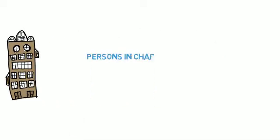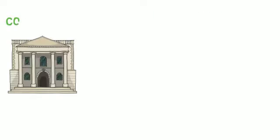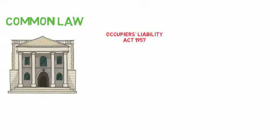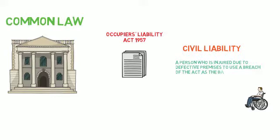You would imagine that persons in charge of premises should have some responsibility to make sure that visitors are safe when using their premises, and you'd be right. The Common Sense Principle was established in common law through decisions made over the years by judges, but it's also clarified in statute law in an Act of Parliament, the Occupier's Liability Act 1957. Note that we are still concerned here with civil liability, so the sole purpose of this Act is for a person who is injured due to defective premises to use a breach of the Act as the basis of a civil action.